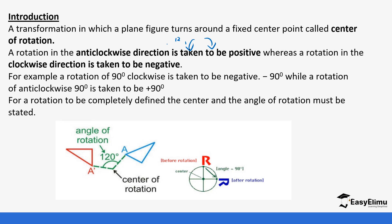For example, if you look at A and A prime, A is rotating anticlockwise to 120 degrees — and since it's anticlockwise, we say it is positive. Then if you look at letter R, it's rotating clockwise, so it is negative 90 degrees. We have the center of rotation and the angle of rotation, and that helps us get the image. Even when you are given the center, angle, and object, you can find the image — even when it's not on the Cartesian plane.